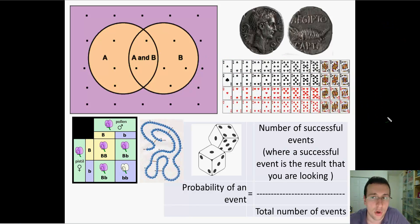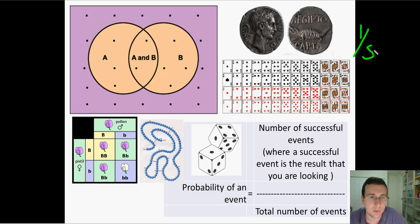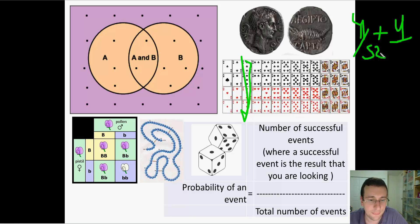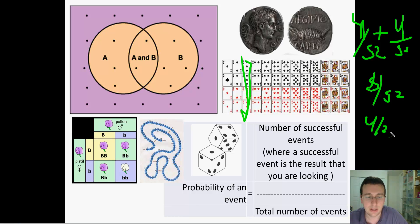What are the chances of drawing a three or a four from the deck? There are four threes in a deck, so that's four out of 52. There are also four fours, so that's four more out of 52. Adding them together gives eight out of 52, which simplifies to four out of 26, or two out of 13.